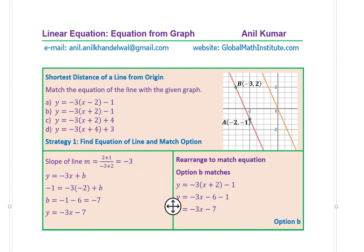Okay, now let's see how to solve it. Let's follow the first strategy. In the first strategy, we'll do as normal. I wrote A as the point (-2, -1) and B as (-3, 2). So with the help of these two points, we can find the equation of the line. That is our strategy number one: find the equation of the line and then match the options.